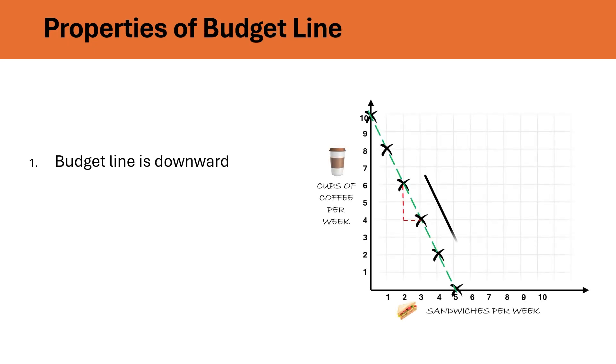It has a negative slope. That is, it slopes downwards as more of one good can be bought by decreasing some units of the other good. The second property is that the slope of the budget line is represented by a constant price ratio, which we discussed in our last few slides, which is minus PS upon PC. Since it is constant throughout, therefore, this is always a straight line.